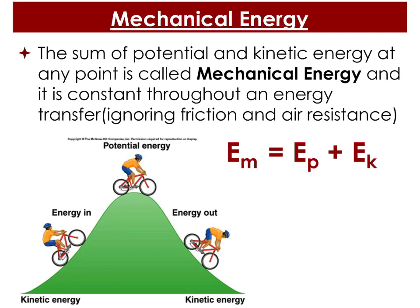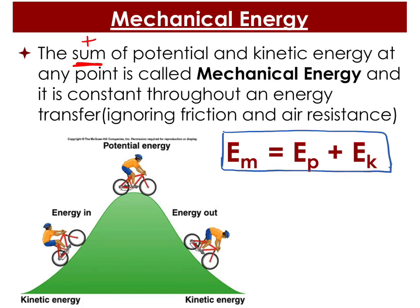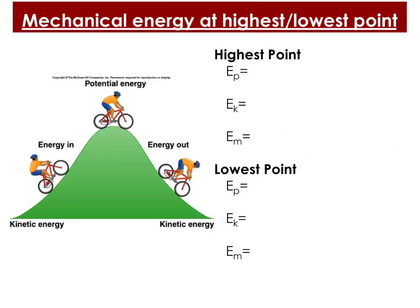Let's move on to mechanical energy. Mechanical energy is a specific type of energy — it's the sum, meaning the addition, of potential and kinetic energy at any point along an object's motion. It's constant, meaning the number stays constant, but the way we get it isn't always the same depending on where the object is.